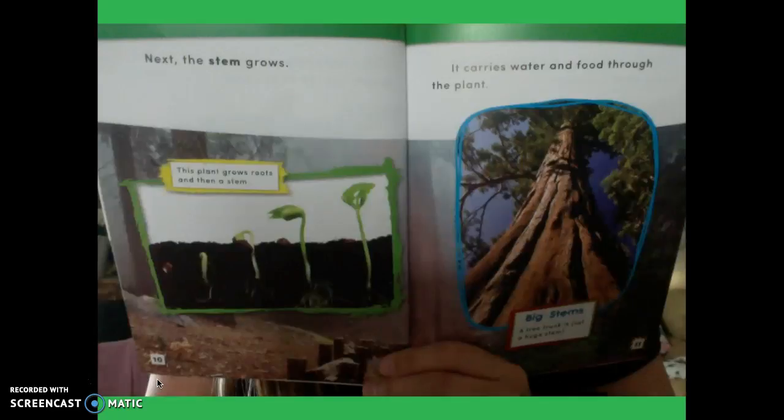Next, the stem grows. Oh, I see a caption. Let's read it together. This plant grows roots and then a stem. It carries water and food through the plant. Oh, another caption. Big stems. A tree trunk is just a huge stem. So we had a caption here on this page we read together and then also one on the other page. Remember, captions are a sentence or two that tells us what is in the photograph.